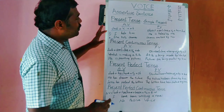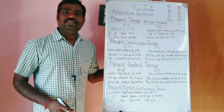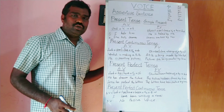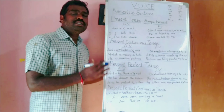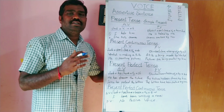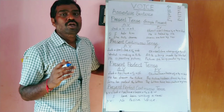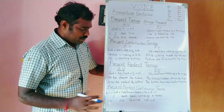So, hee vidanga manu, active voice nandi passive voice loki maatsuko wali. Okay? Structure of the assertive sentence — these four important structures we must remember.